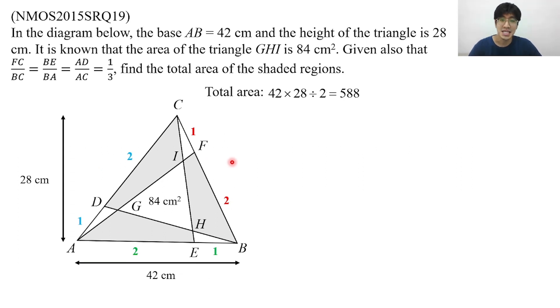When you see all these ratios on the sides, it should immediately remind you of the equal height model. Whenever you have a big triangle and a line slides across, and you're given the ratio of the base, then we know that the ratio of this base is equal to the ratio of the areas of these two triangles. Tell me, how many equal height models can you find from this diagram? Very good, there are a total of three equal height models.